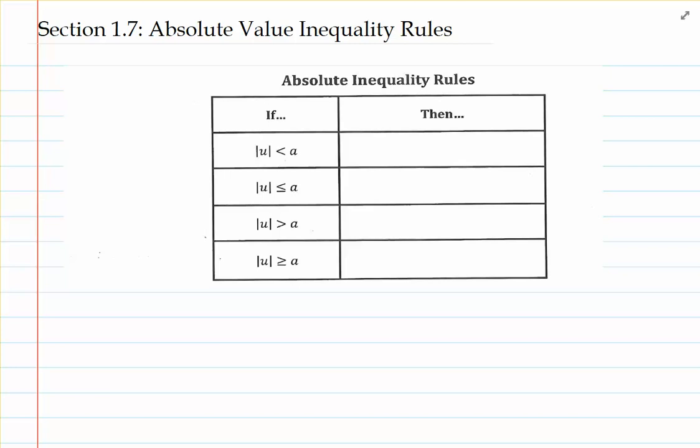The last two rows involve the inequality symbols greater than and greater than or equal to. I'm going to show you the rules that correspond to each of these absolute value inequalities, and these are rules that we'll be applying to solve the next two examples in the note packet.